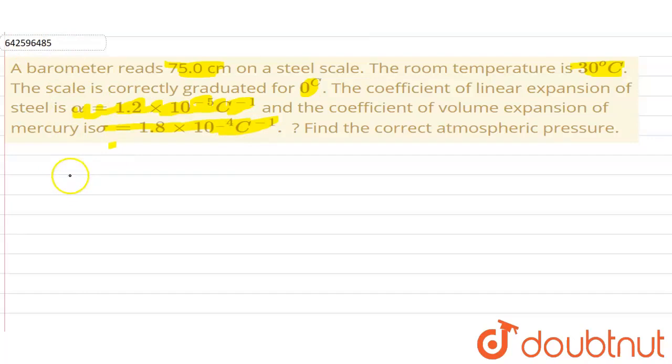So what we have been given in the question is, a barometer is correctly graduated for temperature 0 degree Celsius at which it reads 75 cm. Now the room temperature given to us is how much? 30 degree Celsius.